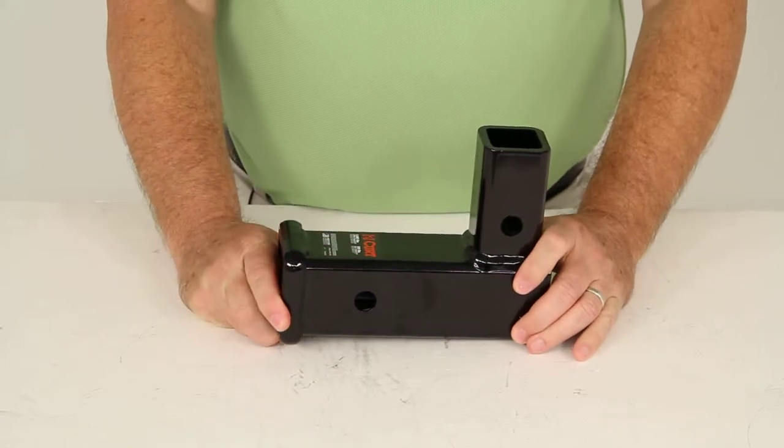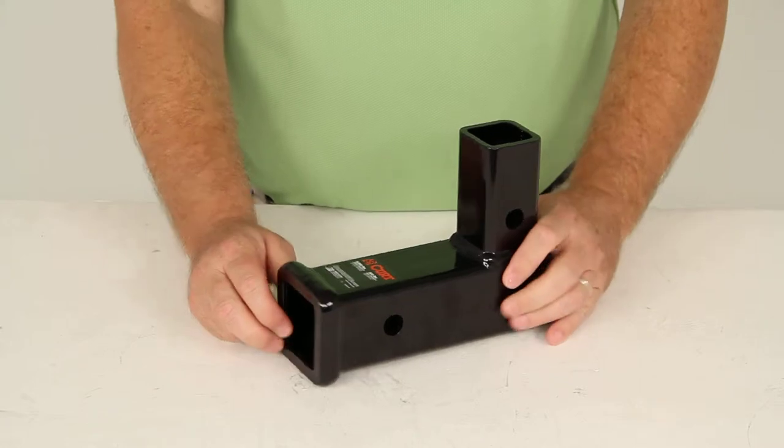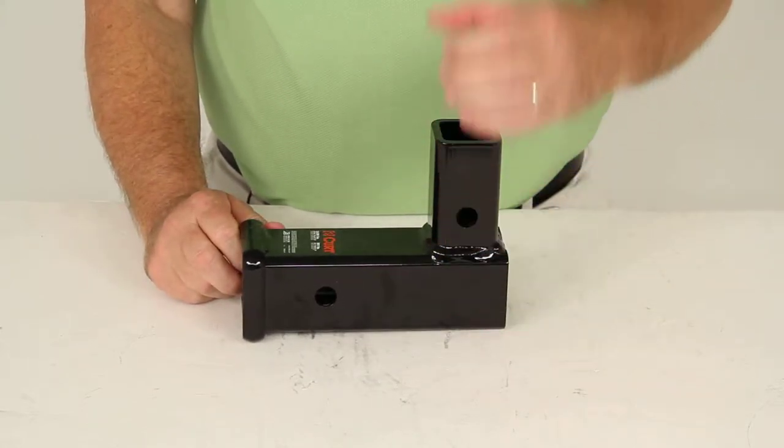This part is designed to fit on the CURT Stealth hitches. It is designed to fit a vertical hitch. A vertical hitch would be one where the receiver tube is actually up and down.